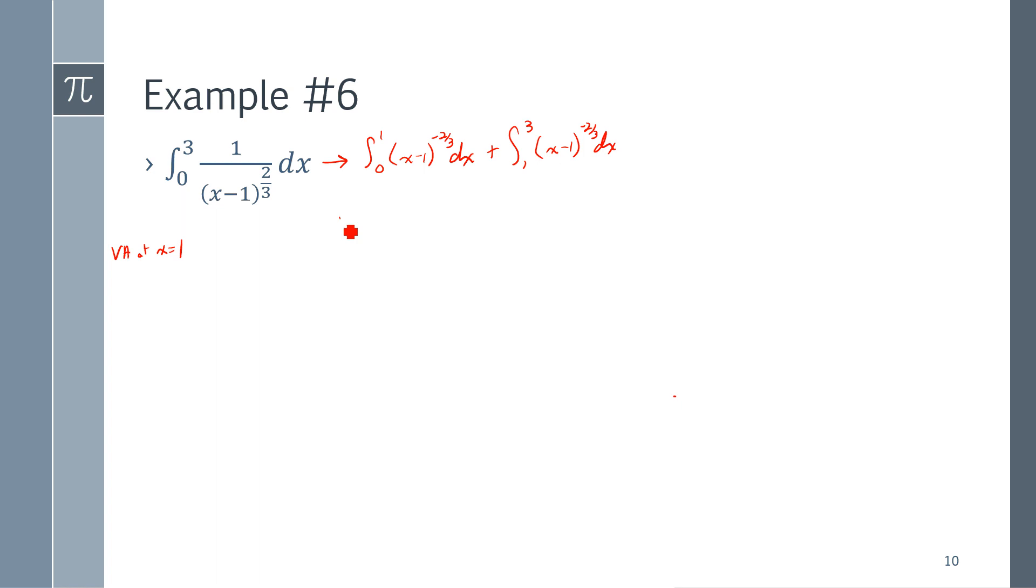If I'm going from 0 to 1, I am approaching 1 from the left. And from 1 to 3, I am approaching 1 from the right. Because, again, it does make a difference what side we are approaching a vertical asymptote from. So, we have to make sure we're aware of it if it's from the left or the right.